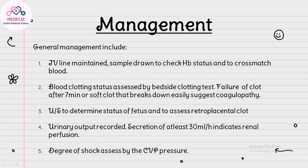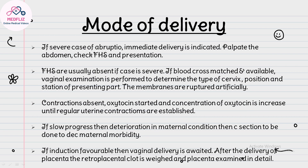General management includes: maintain IV line, draw samples to check hemoglobin, cross-match blood, and assess clotting status by bedside clotting test. Failure of clot formation after 7 minutes or soft clots that break down easily suggest coagulopathy. Perform ultrasound to determine fetal status and assess the retroplacental clot. Record urinary output — at least 30 ml per hour indicates adequate renal perfusion. Assess degree of shock by CVP pressure.